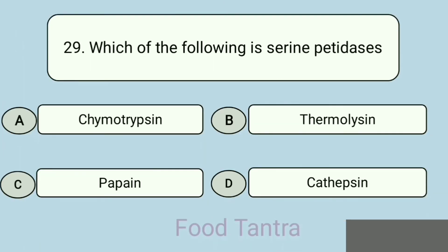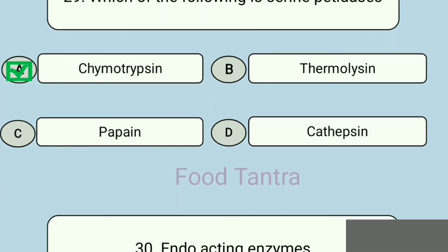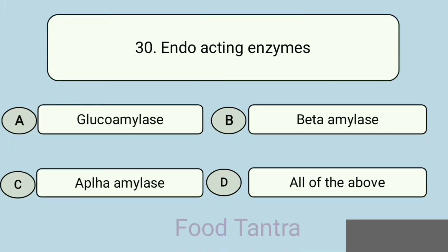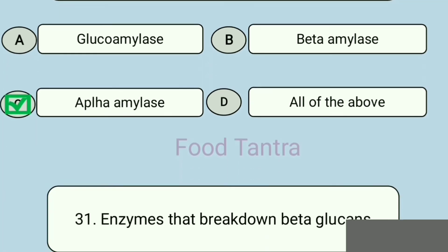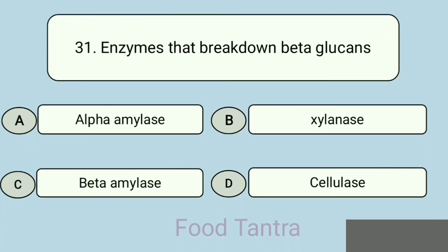Question 29: Which of the following is a serine peptidase? Option A: Chymotrypsin. Option B: Thermolysin. Option C: Papain. Option D: Cathepsin. Answer: Chymotrypsin. Question 30: Endo-acting enzymes — Option A: Glucoamylase. Option B: Beta amylase. Option C: Alpha amylase. Option D: All of the above. Correct answer: Alpha amylase.